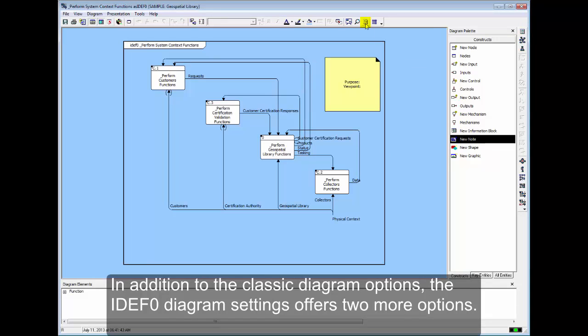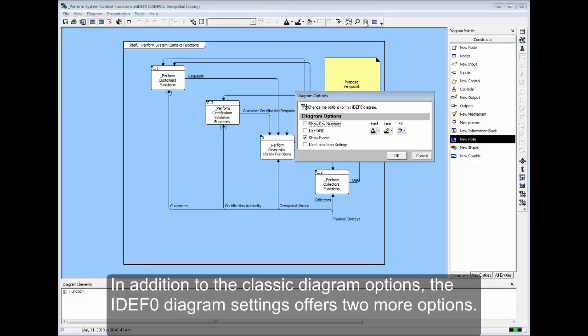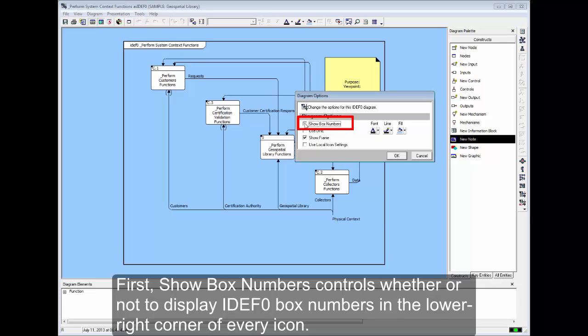Under the classic diagram options, the IDEF0 diagram settings offers two more options. First, Show Box Numbers controls whether or not to display IDEF0 box numbers in the lower right corner of every icon.